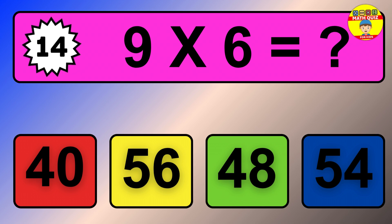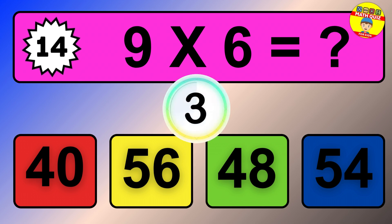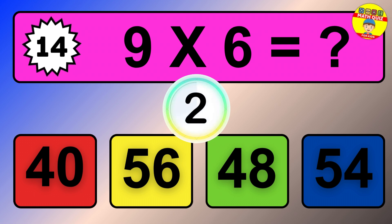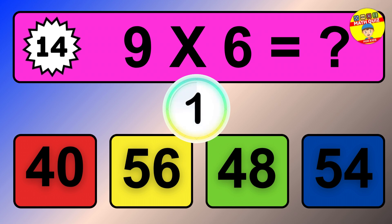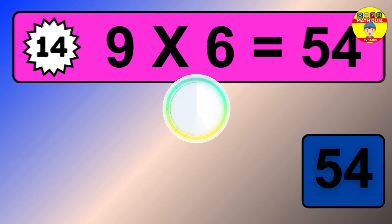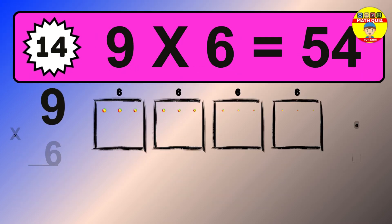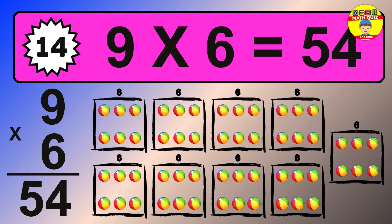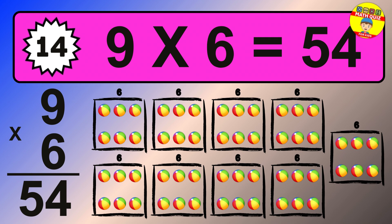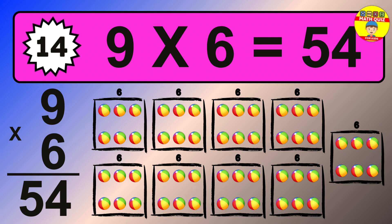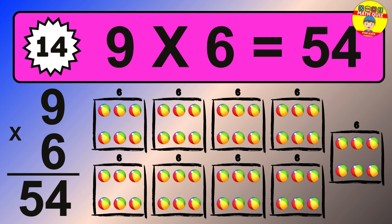Question 14. 9 times 6 equals what? The answer is 9 times 6 is 54. To calculate, we have 9 groups with 6 balls each one. So how many balls do we have? 54 balls.